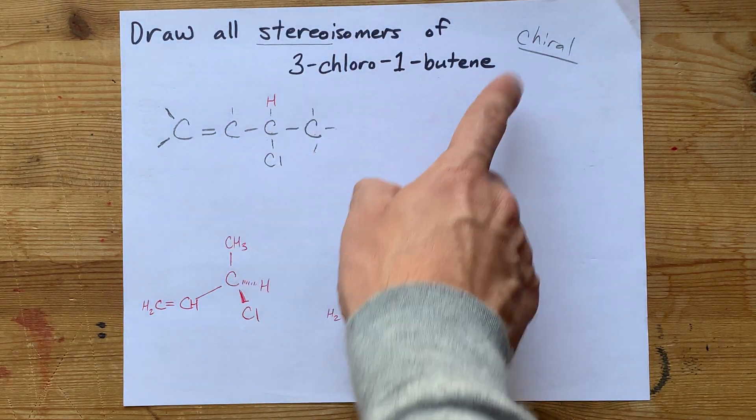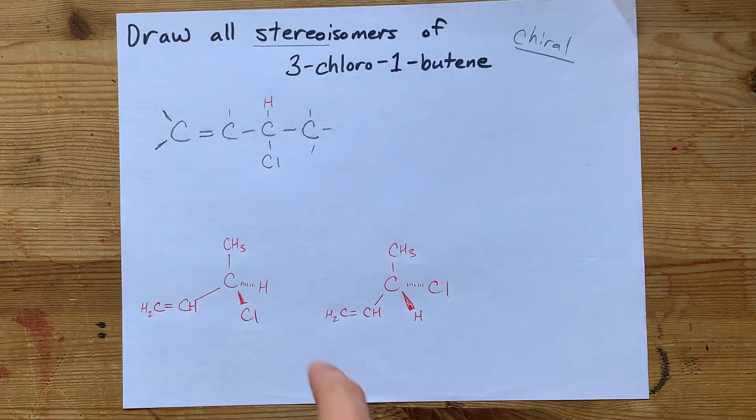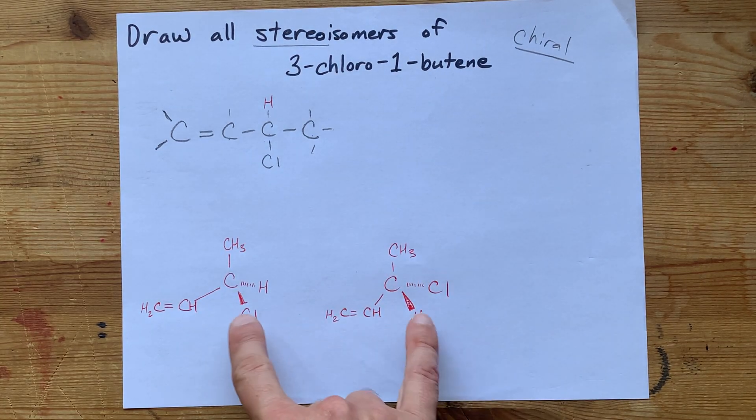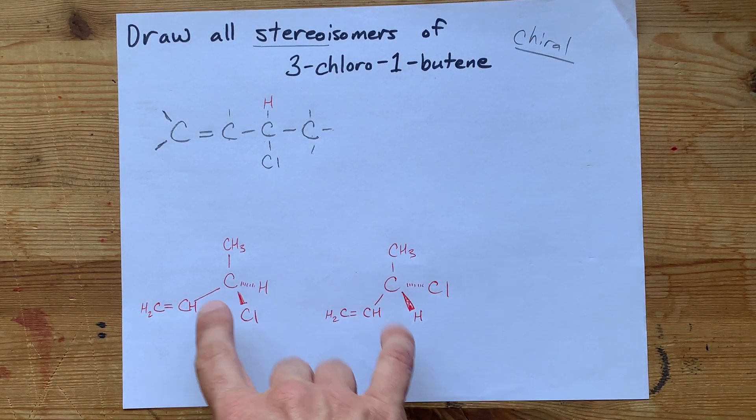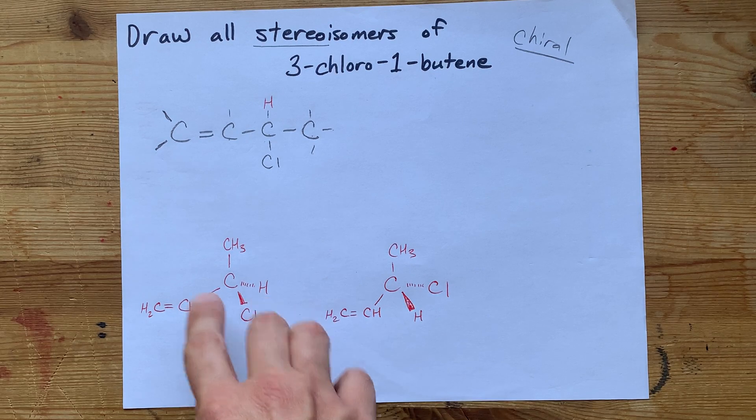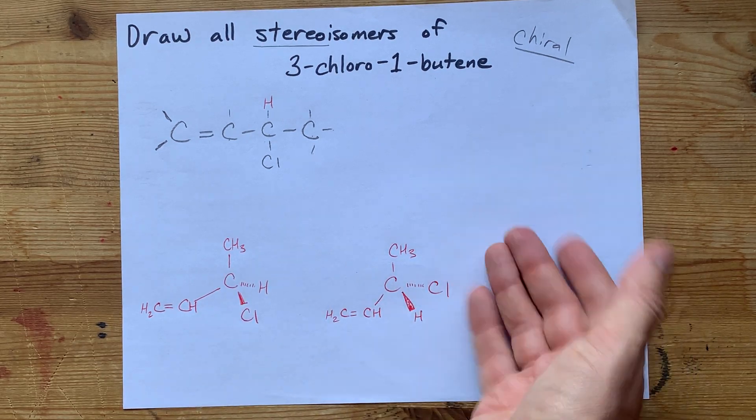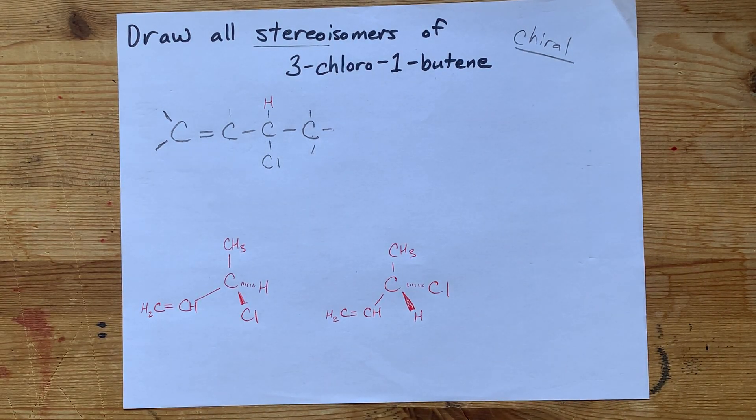Step one, draw the molecule. Step two, find your stereocenters. Step three, draw all two possible configurations around each of those stereocenters. Thanks for being with me and best of luck.